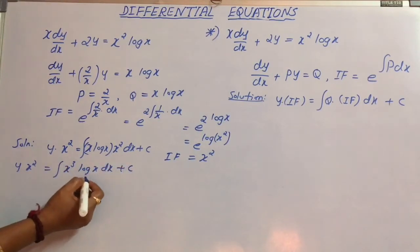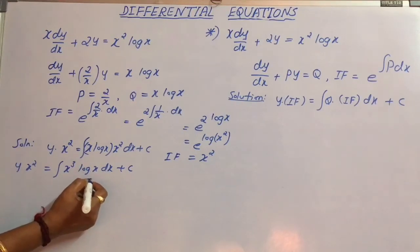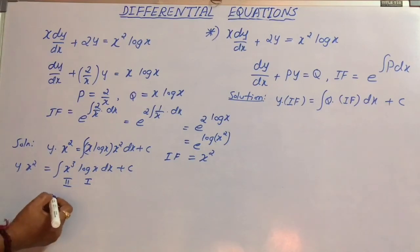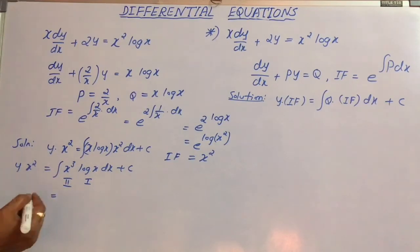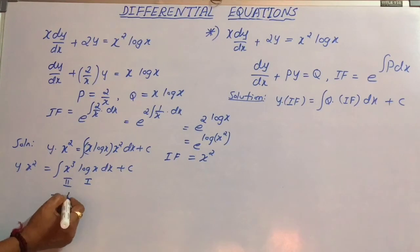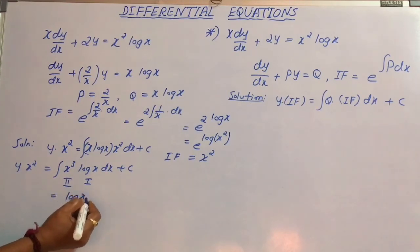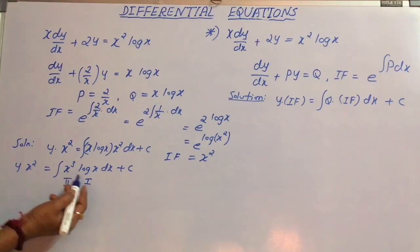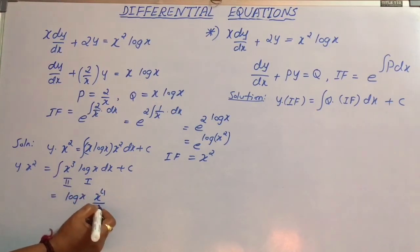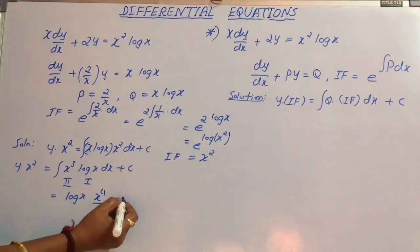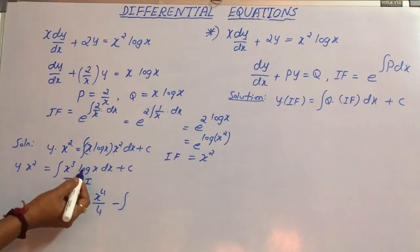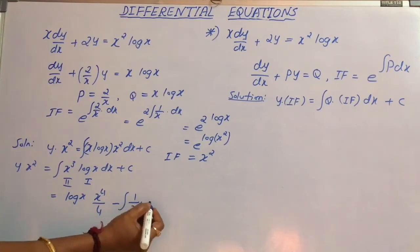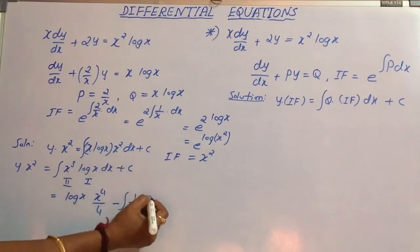Now, integrating using integration by parts, log x is considered the first function and x³ is considered the second function. Keeping the first function as it is, that is log x, multiplied by the integral of the second function, that is x⁴/4, minus the integral of the derivative of the first function, that is 1/x, into the integral of the second function, that is x⁴/4, dx.